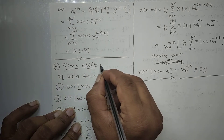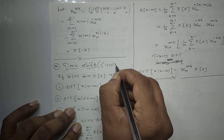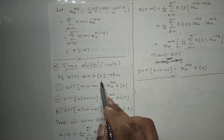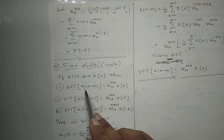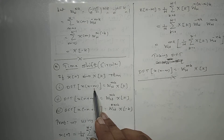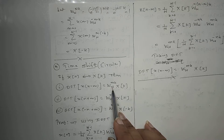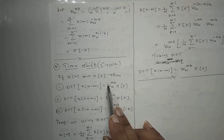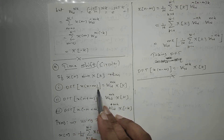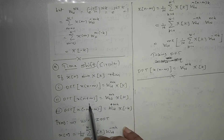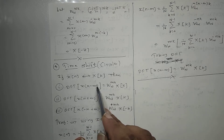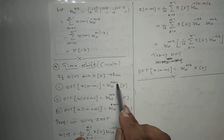The circular time shift property says that if x[n] has DFT X[k], then the DFT of x[n-m] will be WN raised to mk into X[k]. So if we delay the signal, its DFT will be WN raised to mk multiplied with X[k]. This property says that if we delay the signal in the time domain, the DFT domain signal's phase will be shifted.